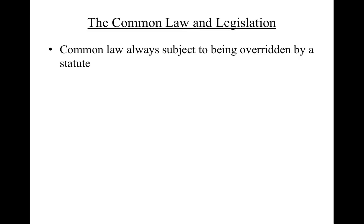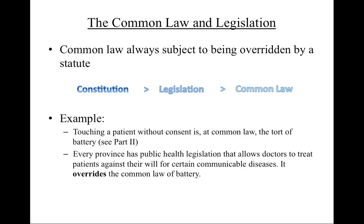Just like regulations are subordinate to statutes, it is important to understand the common law's place in the hierarchy of sources as well. The common law, made by judges, is always subject to being specifically overridden by the elected government by statute. The pinnacle of the hierarchy is the Constitution, which is the supreme law of the land — it is greater than and sets the boundaries for legislation created by the elected levels of government. In turn, legislation is greater than the common law, made by unelected judges. Here is a simplified example: touching a patient, such as delivering an injection, without their consent is the tort of battery at common law. However, every province has passed a statute that allows doctors to treat patients against their will for certain communicable diseases. This means that what would have been against the rules of the common law has been overridden by the statutes in question, and the common law of battery is not effective in those limited circumstances.